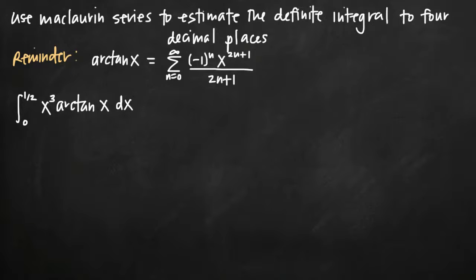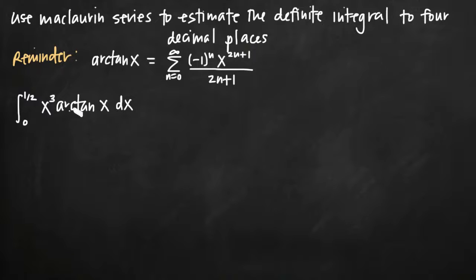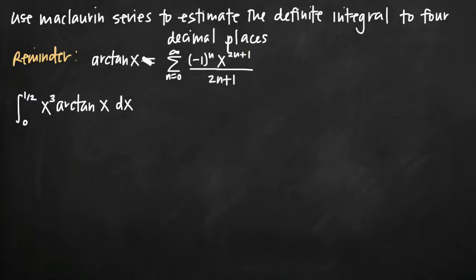Today we're going to be talking about how to use a Maclaurin series to estimate a definite integral. In this particular problem we've been asked to estimate the definite integral from 0 to 1/2 of x cubed arctan of x, or the inverse tangent function. We need to estimate it to four decimal places, and I've written the Maclaurin series formula for arctan of x. We're going to start with that series because it's very similar to our series, which is x cubed times arctan of x.